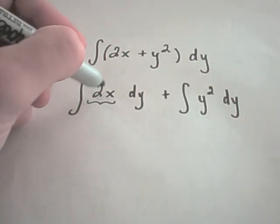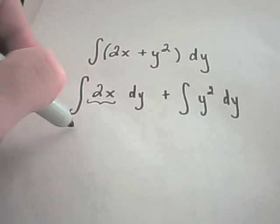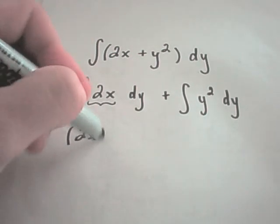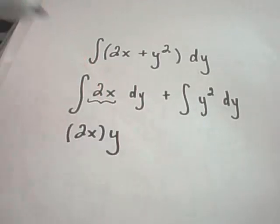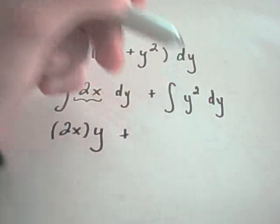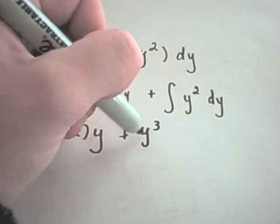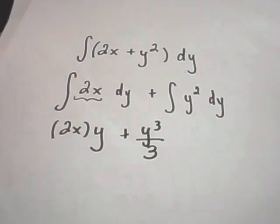So if I was integrating, say, 7dy, I would get simply 7y. So in this case, the constant, 2x, comes along, and I just tack on a y. And then since I'm integrating y squared, I do integrate that like normal, and I'll get y cubed over 3.